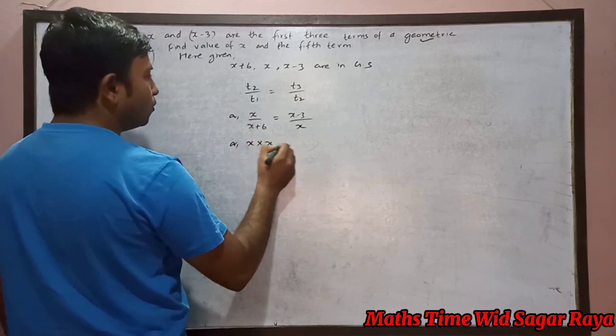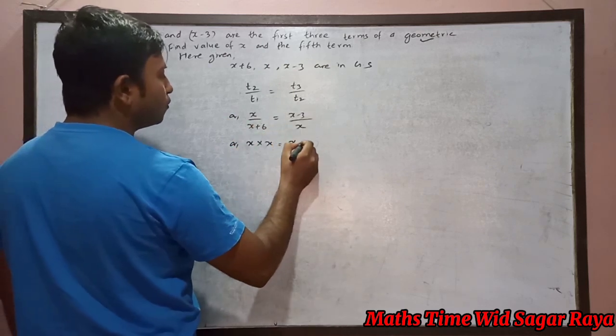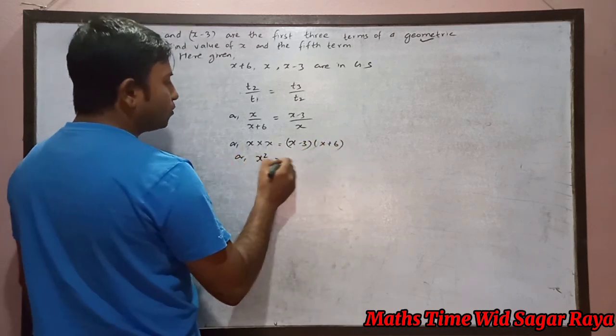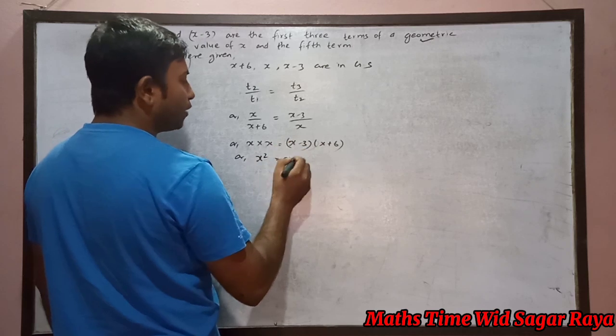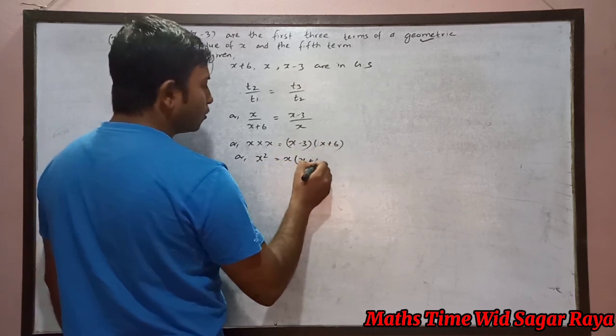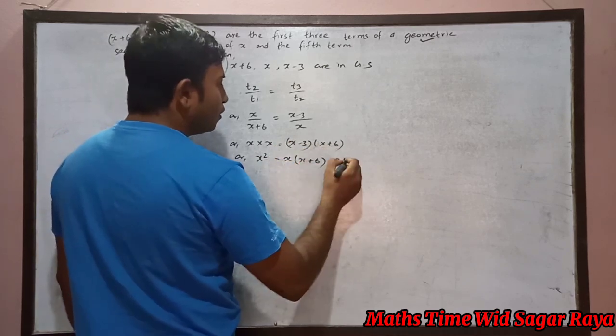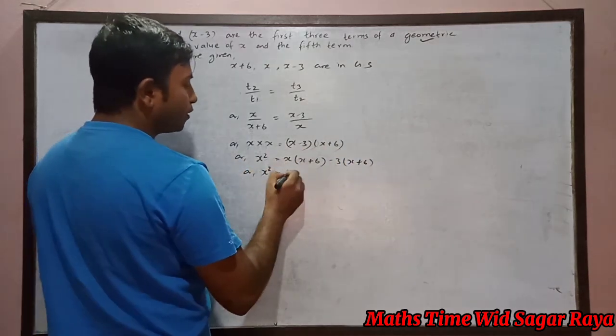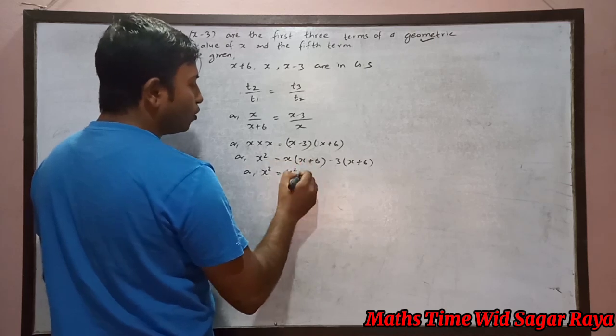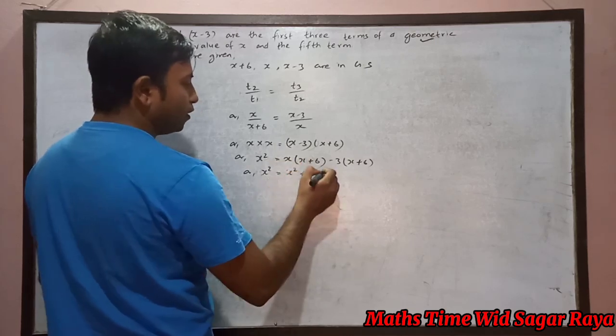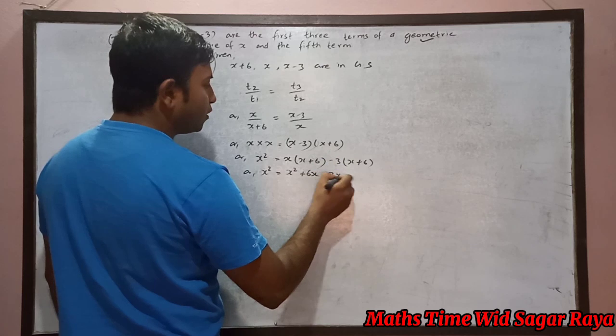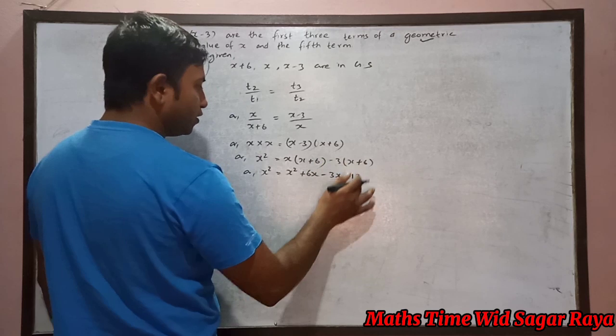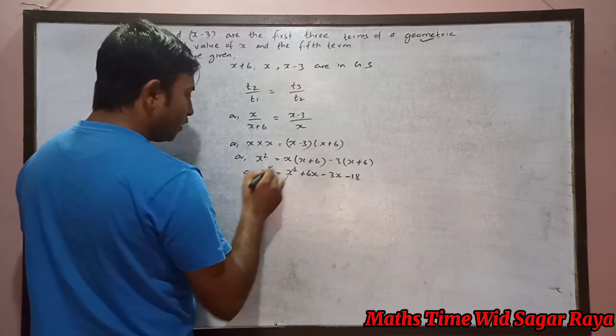x times x equals x minus 3 times x plus 6. x squared equals, let's multiply: x times x plus 6, then minus 3 with x plus 6. After this, x squared equals x times x is x squared, x times plus 6 means plus 6x, then minus 3 times x is minus 3x, minus 3 times plus 6 is minus 18.